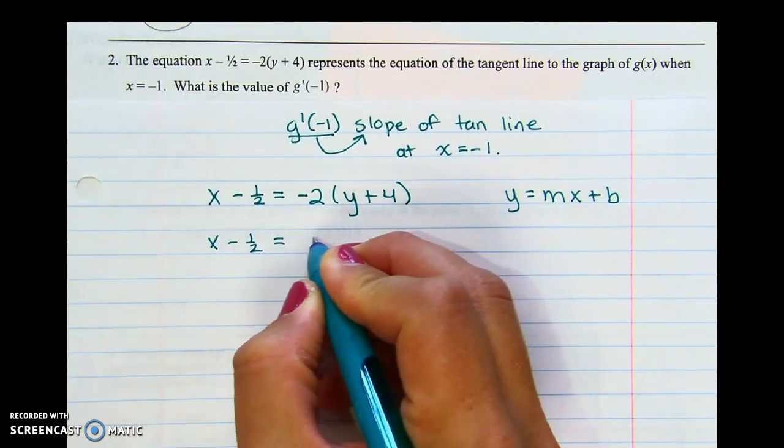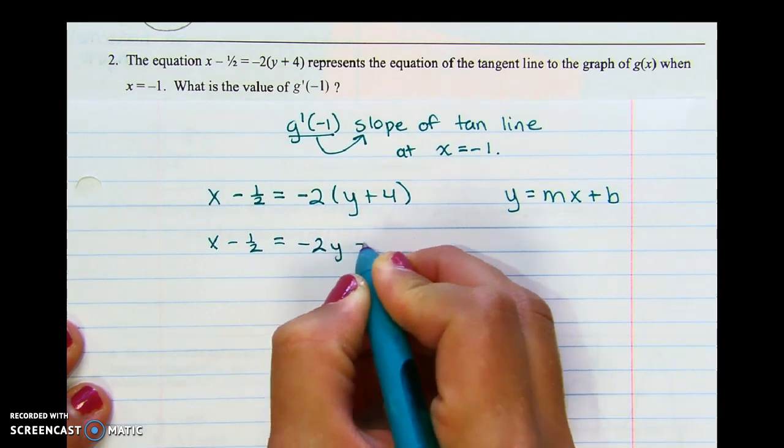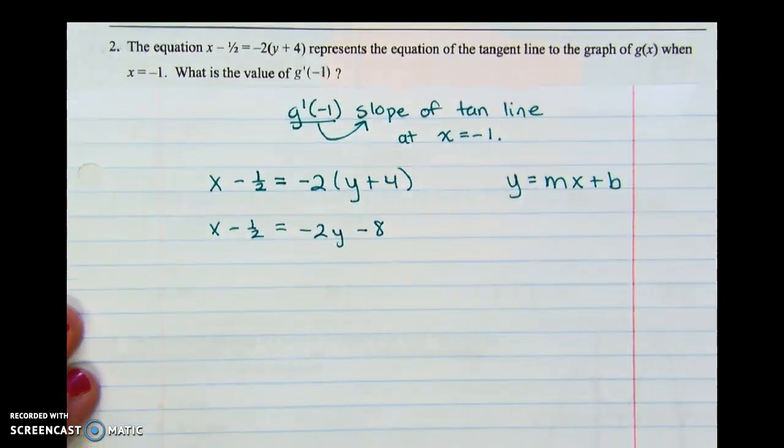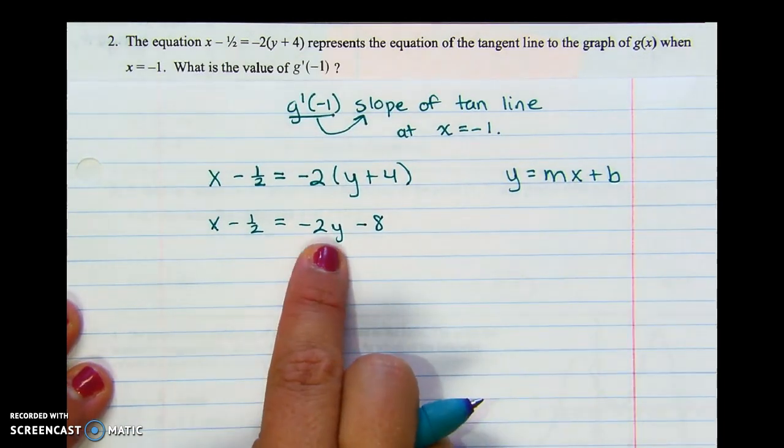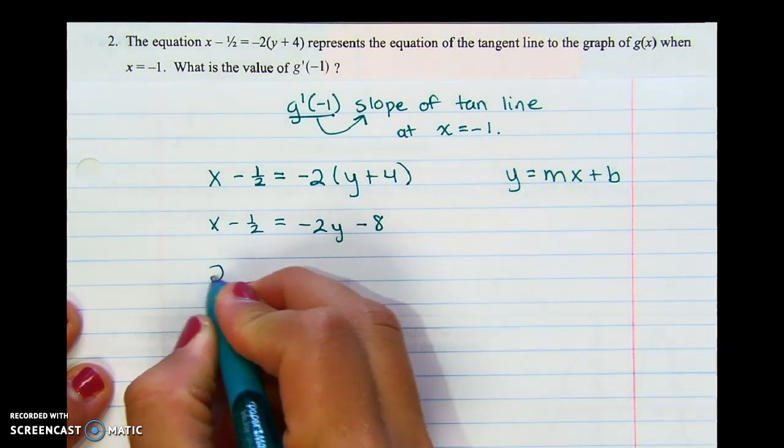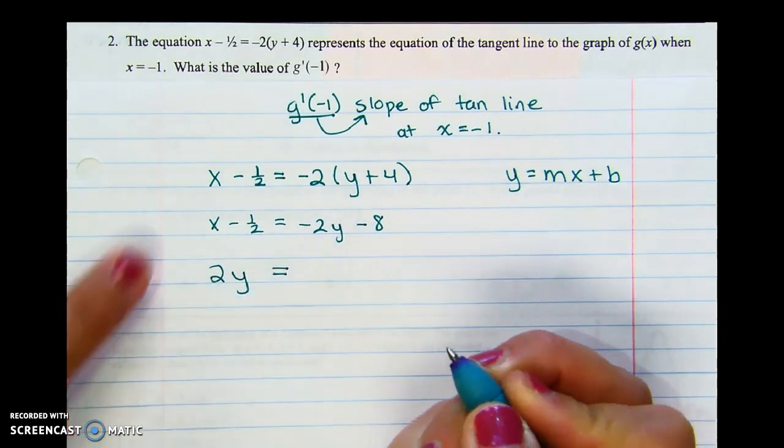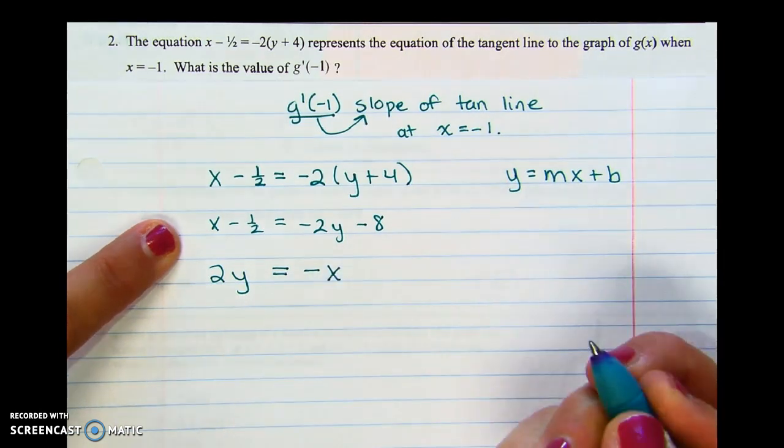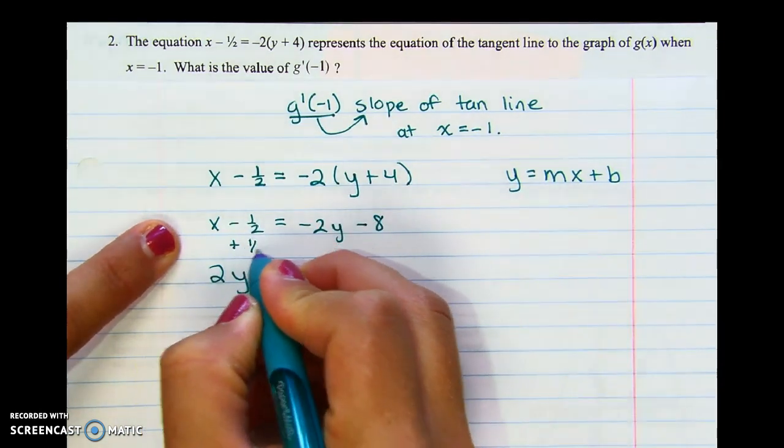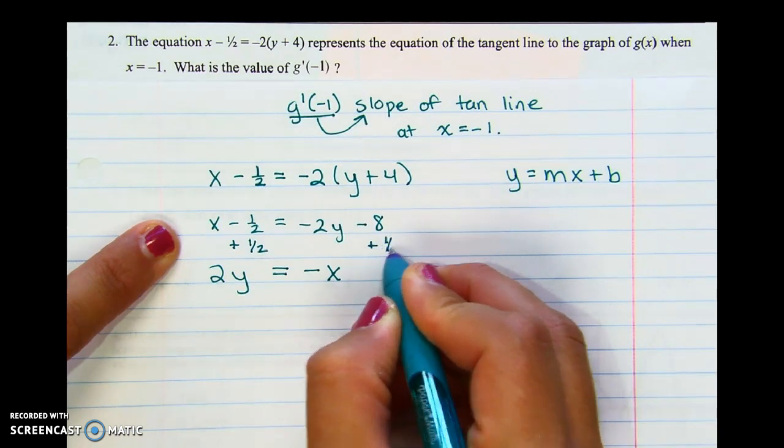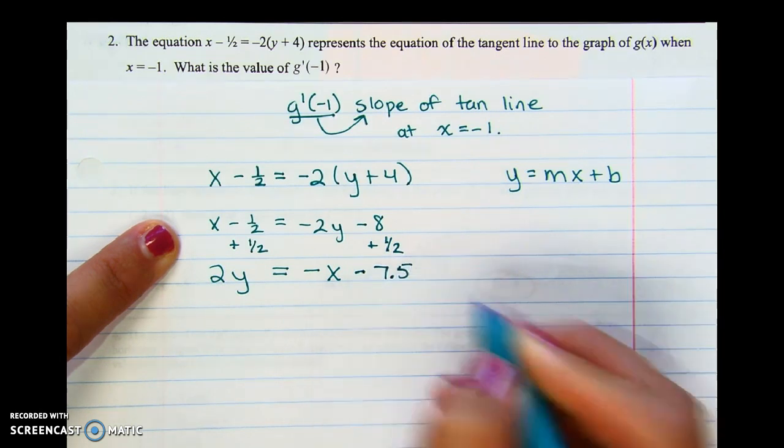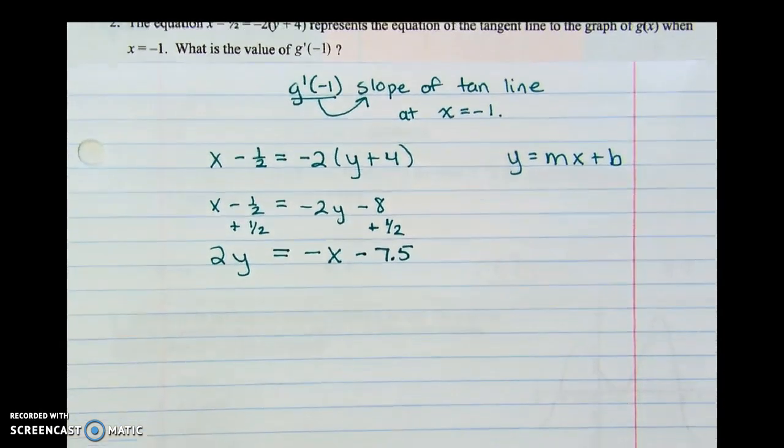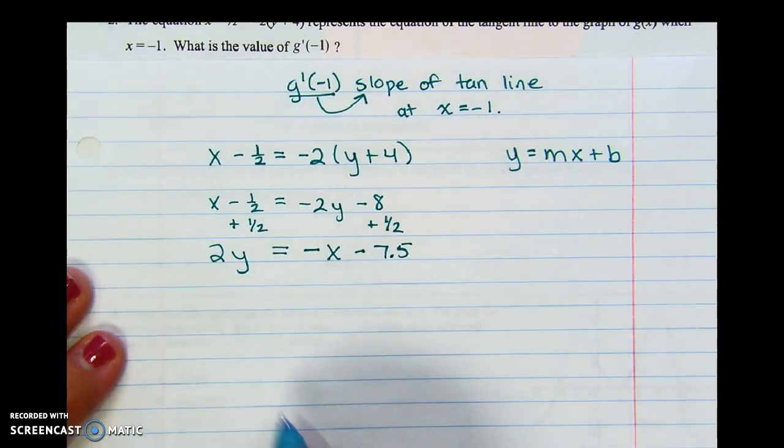y equals mx plus b. So if it looked like this, then the slope would be in front of the x. So is this in y equals mx plus b right now? Can we turn it into that? Alright, so tangent line, make it look like this, then we'll get the slope of the tangent line. Alright, what do we need to do? I'm going to distribute that negative two first. And then I'm going to move everything to the correct side.